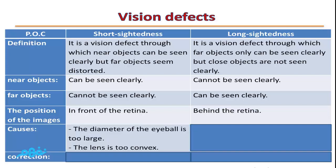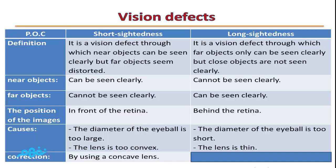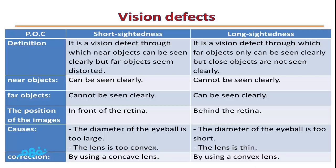Causes of short sightedness: the diameter of the eyeball is too large, so the image forms in front of the retina; or the lens is too convex, collecting light more than normal. Causes of long sightedness: the diameter of the eyeball is too short, so the image forms behind the retina; or the lens is too thin, collecting less light than normal. Correction: short sightedness uses a concave lens; long sightedness uses a convex lens.